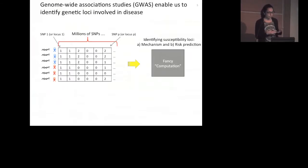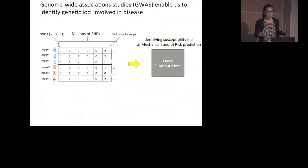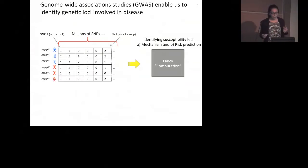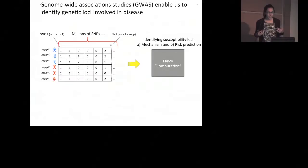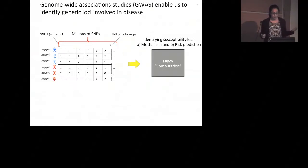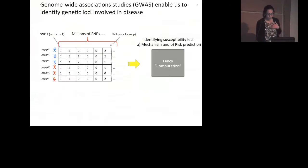Once you have this numeric representation, you can apply all sorts of computations to come up with good hypotheses. The major goal is to identify susceptibility loci — regions in the genome associated with disease occurrence. Once you have these, you can do two separate but overlapping things: figure out the mechanism of the disease and which genes and pathways are involved, or build a risk prediction model to predict which diseases someone might be susceptible to given their DNA.